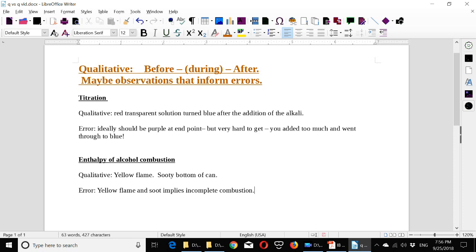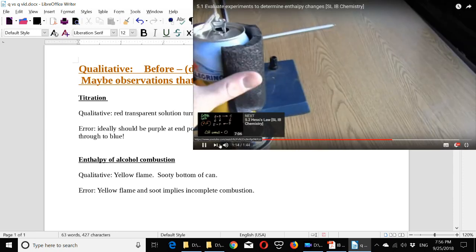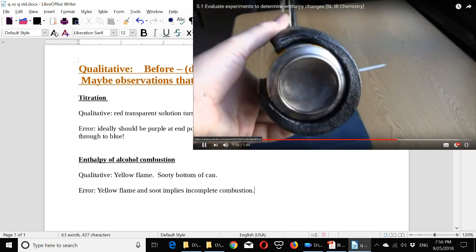So that could inform an error in your titration. Or another classic example: the enthalpy of alcohols. You got a yellow flame and the sooty bottom of the can. There was also incomplete combustion—there's carbon at the bottom.